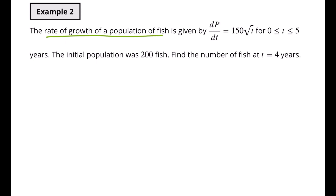Now let's look at a contextual word problem. The rate of growth of a population of fish is given by dp/dt equals 150 times the square root of t. We know the derivative is a rate of change, so this describes the rate of growth. The initial population was 200 fish — anytime we talk about an initial population, that's when time equals 0, so we had 200 fish at t equals 0. We need to find the number of fish when t equals 4 years.